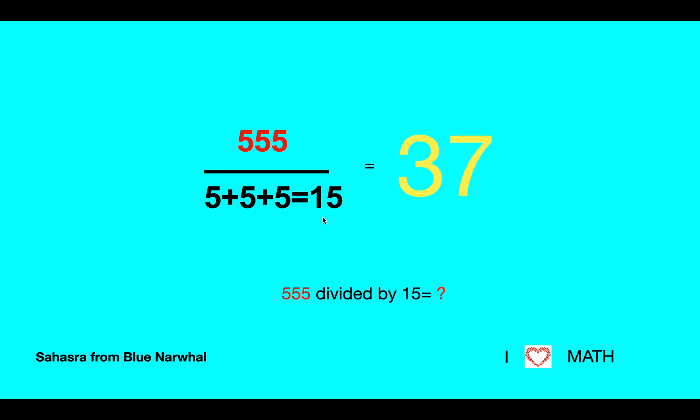Let's see if we can find out if more are doing the same thing. Next I have 666, and when I add those numbers up I get 18. Then 666 divided by 18 equals 37. Again.